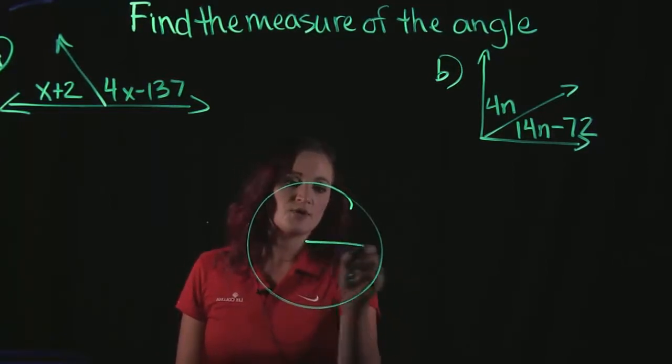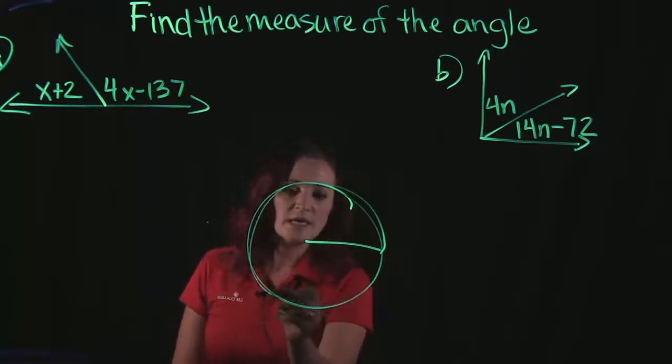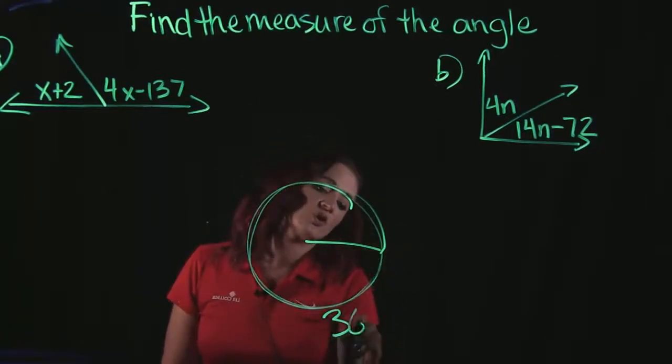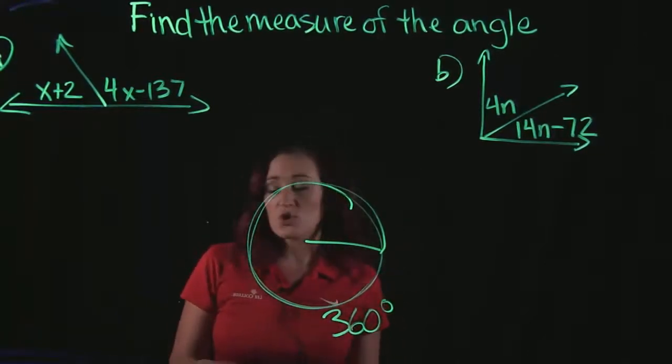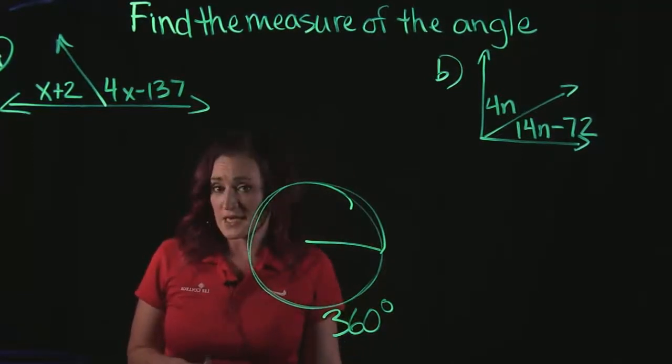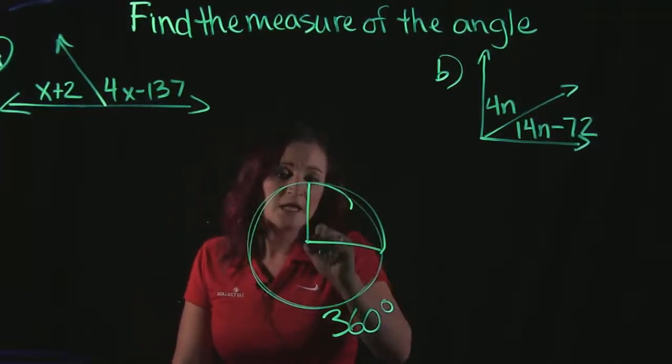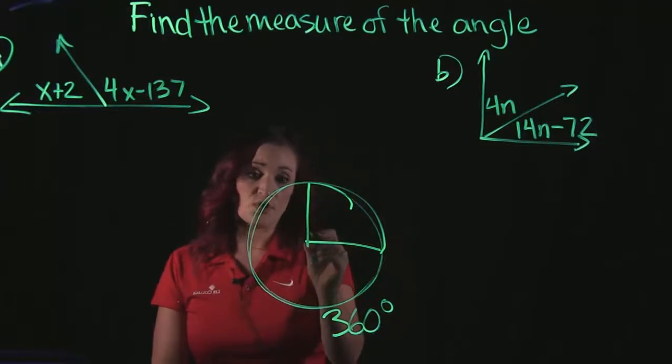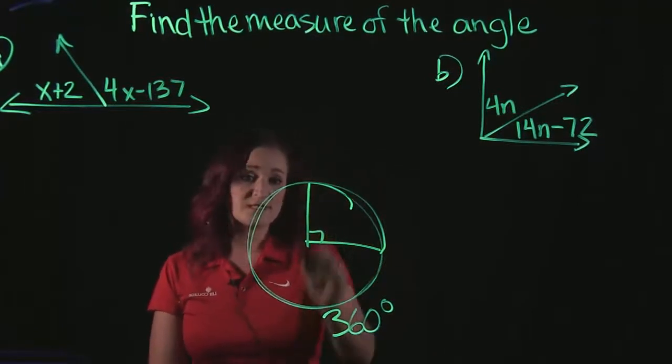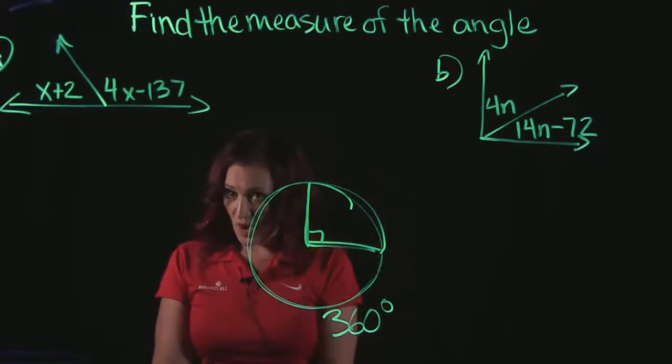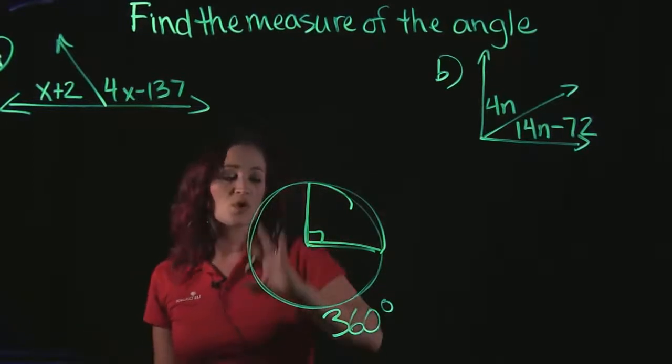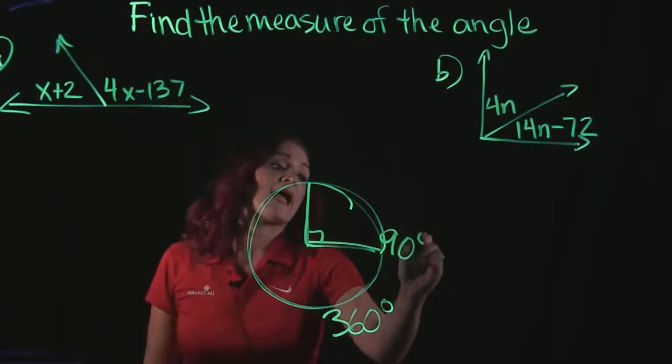So if we take a look at a unit circle and we go completely around, any circle has a total of 360 degrees in it. So if I'm taking a look at a quarter of a circle, just a fourth of this, this is essentially a right angle and any right angle or a quarter of a circle has 90 degrees.